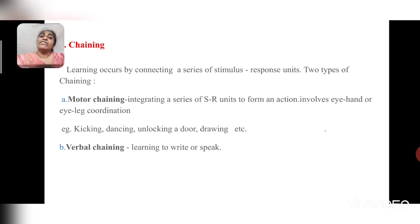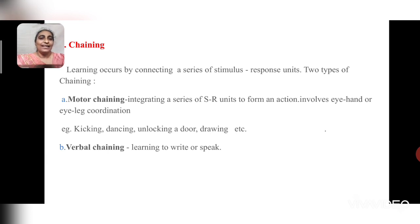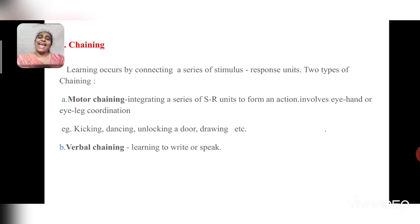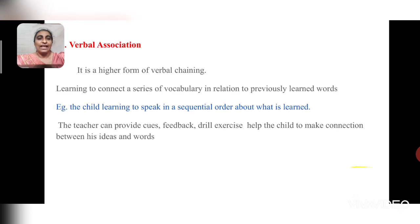The other type is verbal chaining, which is related to verbal activities and vocabularies — learning to write or speak. For example, asking a child to pronounce 'cat': C-A-T, cat. The linking of the stimulus takes place and verbal chaining occurs.